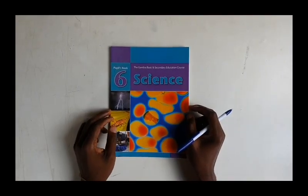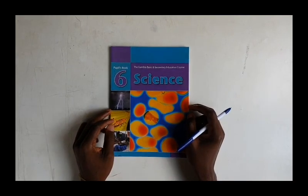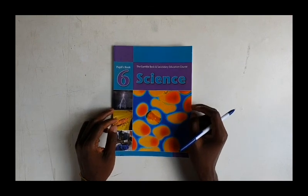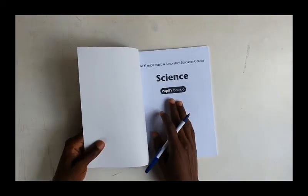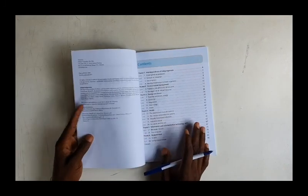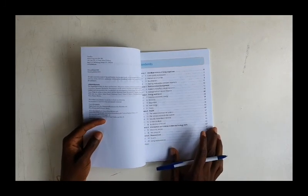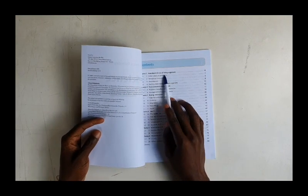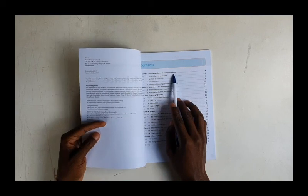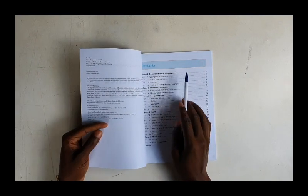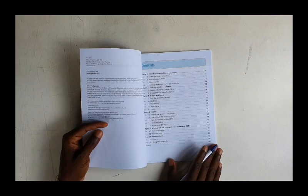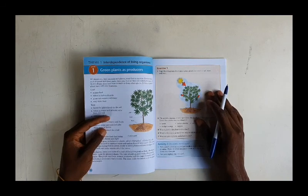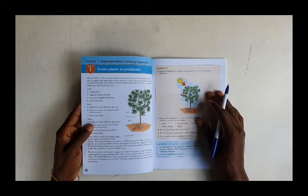Good students, welcome to grade 6 online science class for today. Today we will be taking the first topic of the term, interdependence of living organisms, and we'll be discussing green plants as the producers. If you have any questions please let me know. So, page 4.